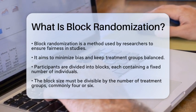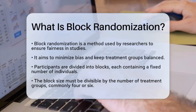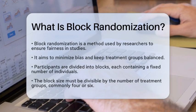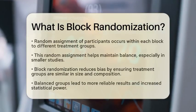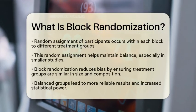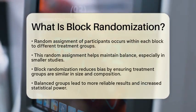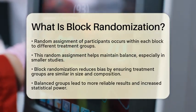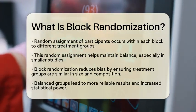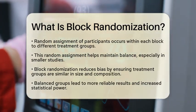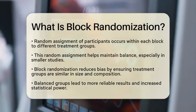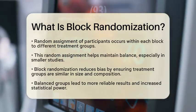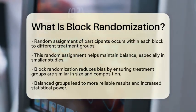Next, within each block, participants are randomly assigned to different treatment groups. For example, if there are two treatment groups and a block size of four, two participants will go to each group. This random assignment helps maintain balance, especially in smaller studies where simple randomization might lead to unequal group sizes.